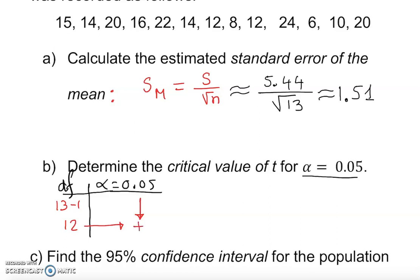Here you go, 2.179. So the critical value is 2.179, plus and minus 2.179. That is how we find the critical value.